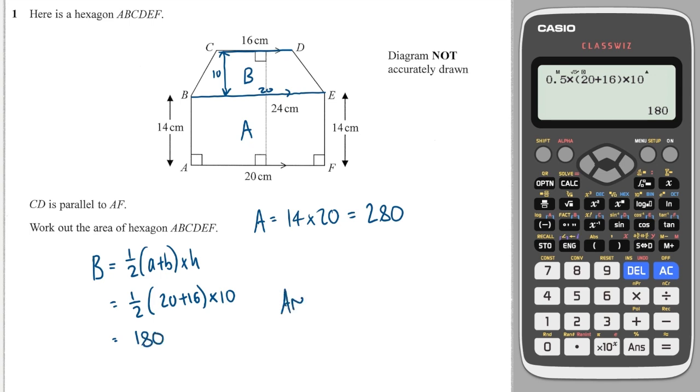So the total area of the compound shape are the two areas added together. And that will give me 460. And that will be centimeters squared.